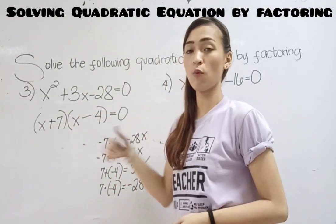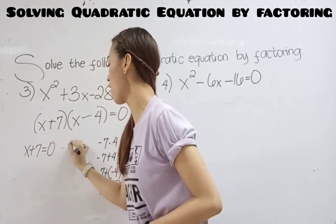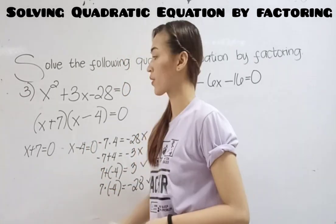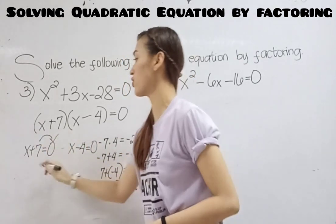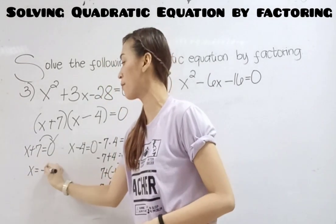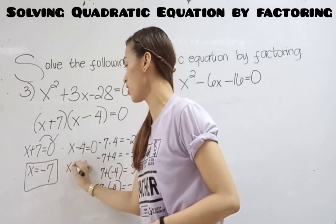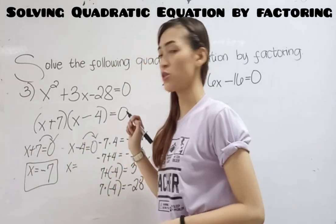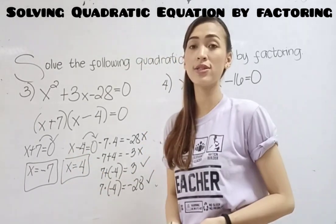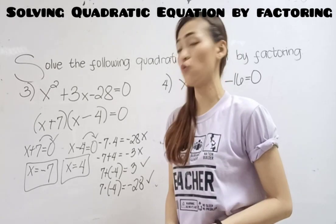Next, equate to 0. So x plus 7 equals 0, and x minus 4 equals 0. Transpose 7 to the right — it becomes negative 7. Transpose negative 4 to the right — it becomes positive 4. The answer is x equals negative 7 and x equals 4.